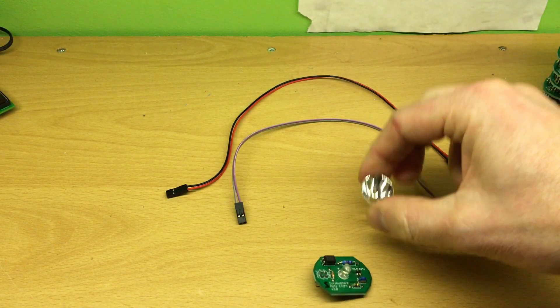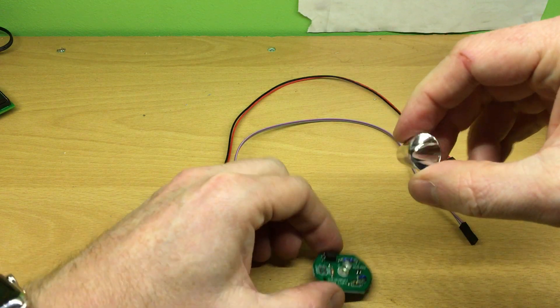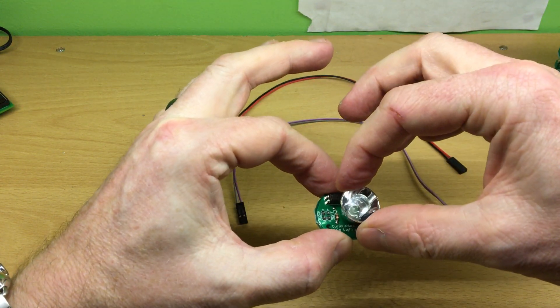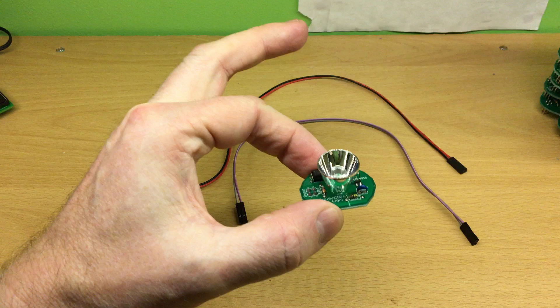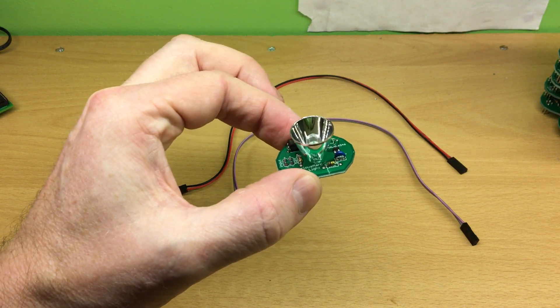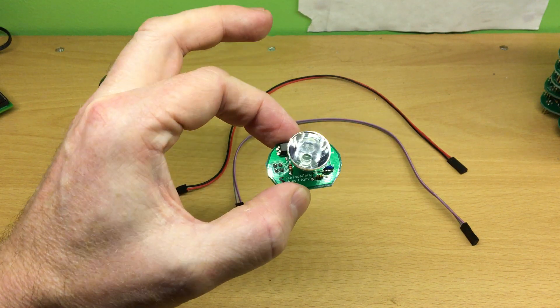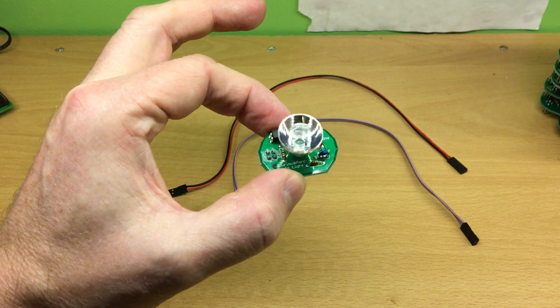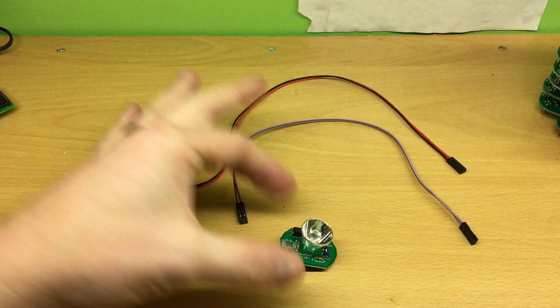You will also get a reflector which just pushes on for the sake of my demonstration, but when you get these you should glue them on with either acid-free silicon, otherwise it'll rot the board if it's got acid in, or ideally a hot glue gun is probably the best thing. So I'll leave that just pushed on there for now.